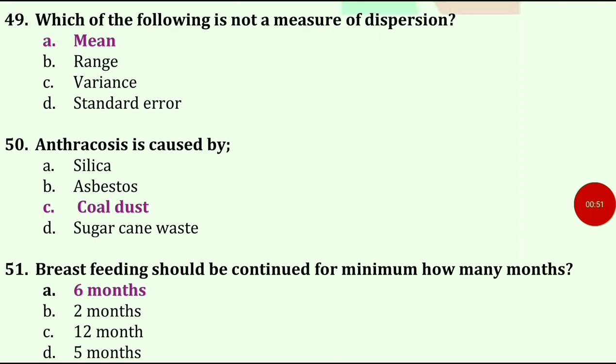Which of the following is not a measure of dispersion? Options are mean, range, variance, and standard error. The answer is mean.